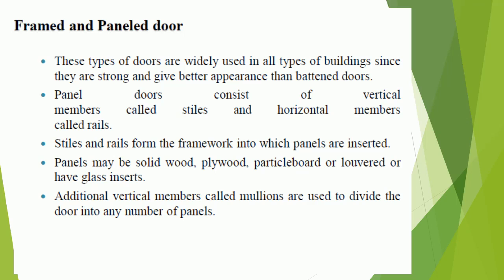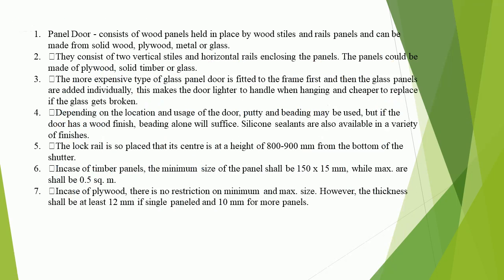Panels may be solid wood, plywood, particle board, louvered, or have glass inserts. Additional vertical members called mullions are used to divide the door into any number of panels. Panel doors consist of wood panels held in place by wood stiles and rails; panels can be made from solid wood, plywood, metal, or glass, with two vertical stiles and horizontal rails enclosing the panels.